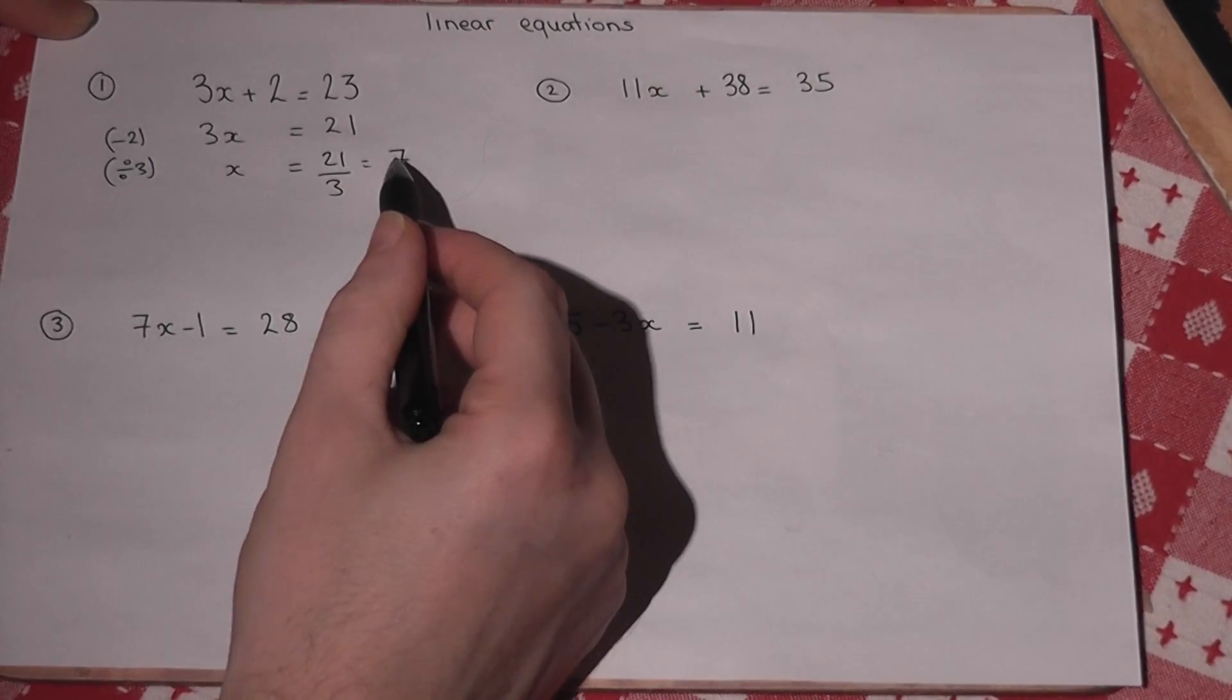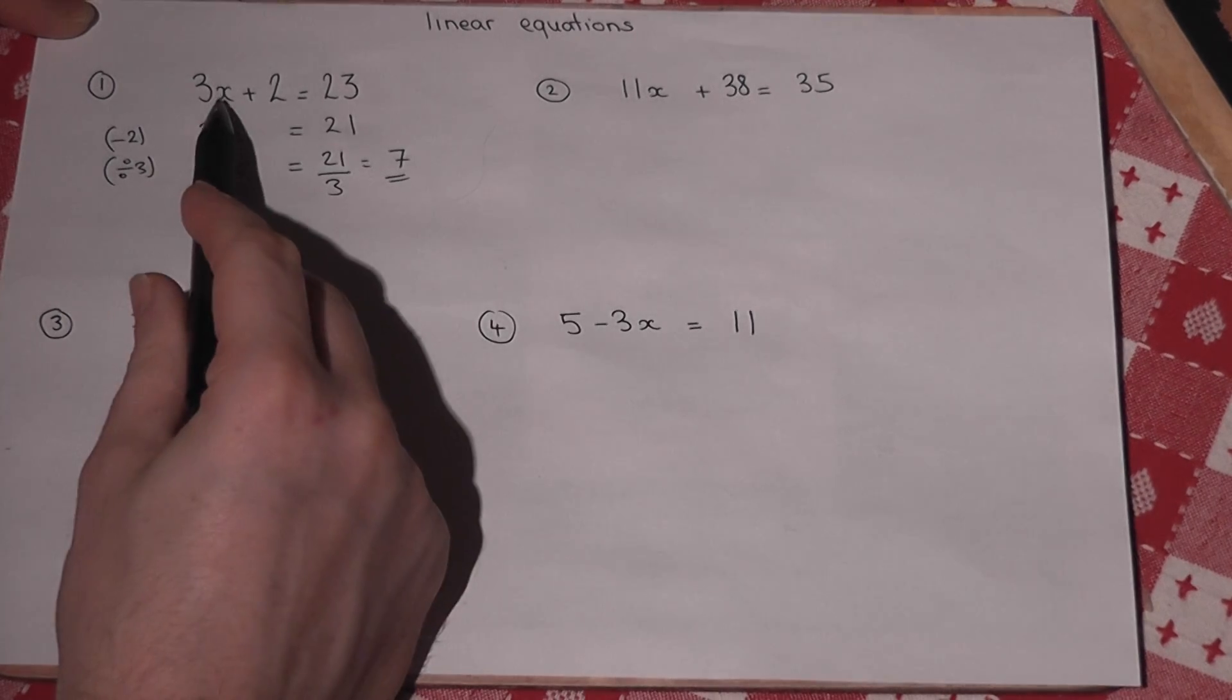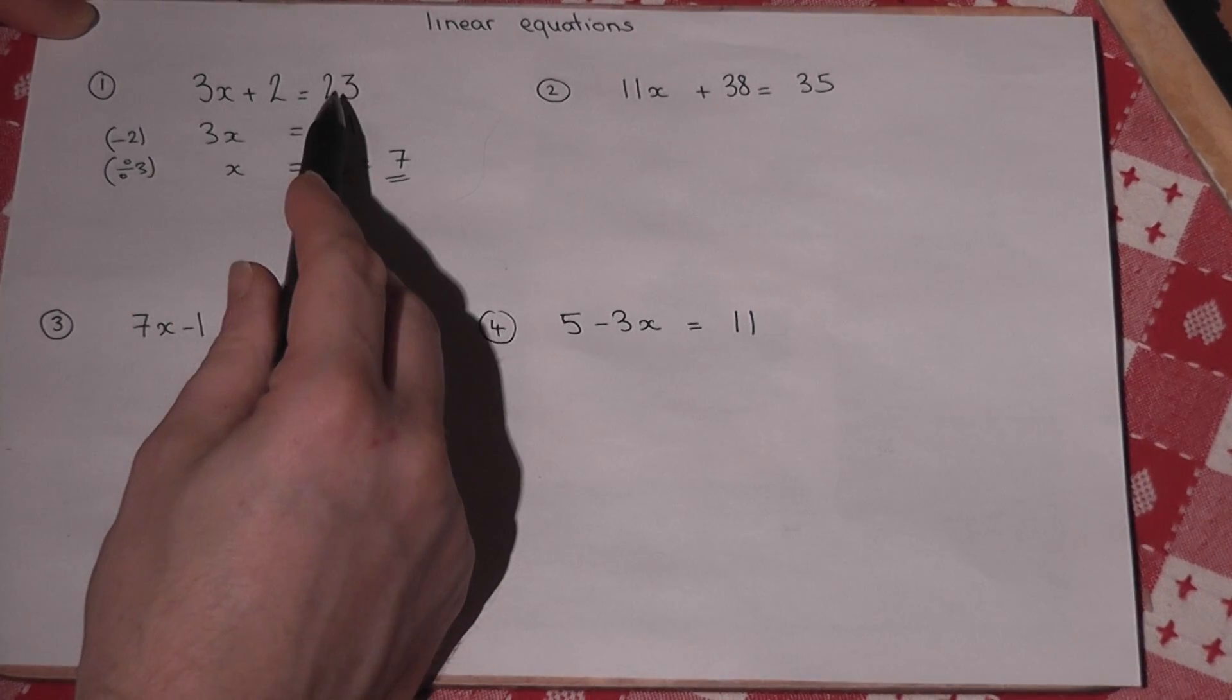So 7 is a solution to the equation. 3 times 7 is 21 plus 2 equals 23.